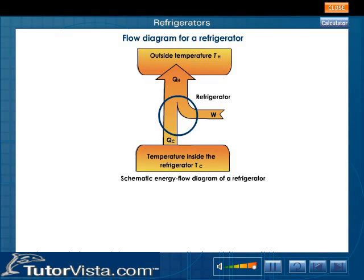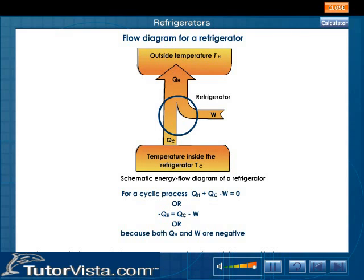According to the first law of thermodynamics, for a cyclic process, QH plus QC minus W is equal to 0, where QH and QC represent the quantities of heat absorbed and rejected. Or, minus QH equals QC minus W. Or, because both QH and W are negative, the modulus of QH is equal to QC plus the modulus of W.